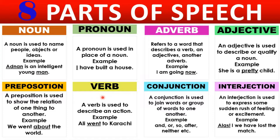Verb is an action word — the action of eating, reading, cooking. That is called a verb. For example, 'Ali went to Karachi.' Now, what is a conjunction? It is a joining word. Two or more words, phrases, or clauses are joined by conjunction. Words like 'and', 'or', 'so', 'after', 'neither' — these are conjunctions.